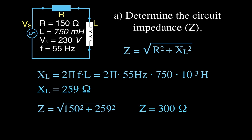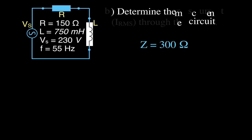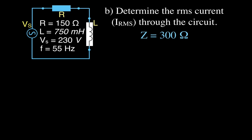Taking the square root, we get that the impedance of that circuit is 300 ohms — that's the sum of all the resistances and reactances. Next, part B, we determine the RMS current. Using Ohm's law for AC circuits: V equals I times Z, where Z is the total impedance.